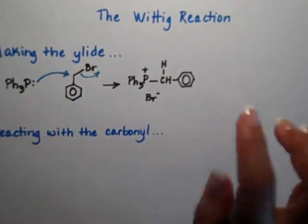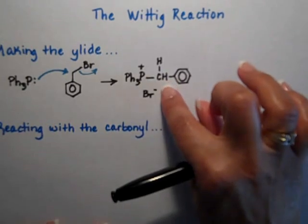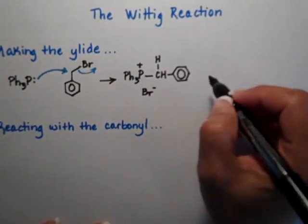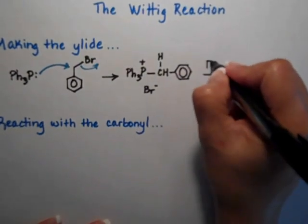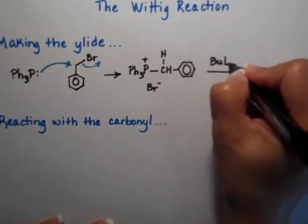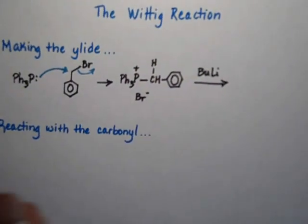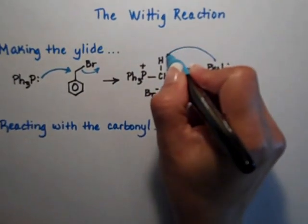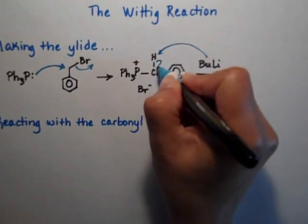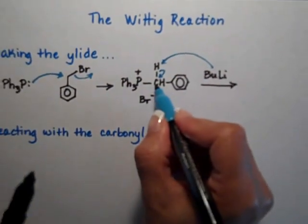The next step of the reaction, I need to make the carbon negative because that's going to be our ylide. I'm going to need a really strong base. And normally what we use is butyllithium. So the butyllithium is going to deprotonate my carbon and it's going to leave the two electrons on the carbon.